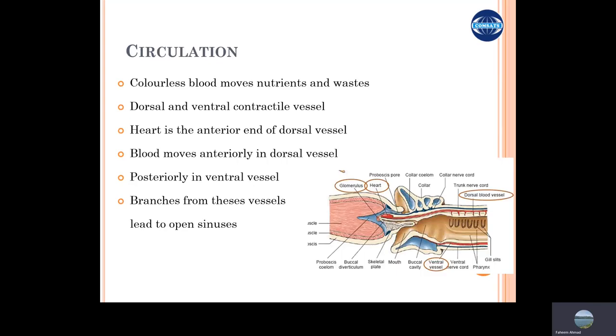The blood circulation in the animal have a true circulatory system. It is mostly closed and have a colorless blood that moves nutrients and waste material from one part of the body to another part. There are two vessels present on the dorsal and ventral surface of the animal.